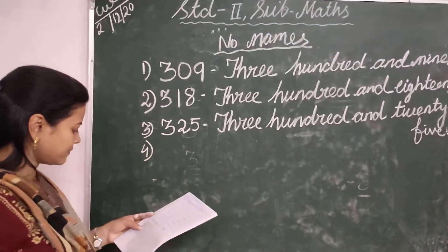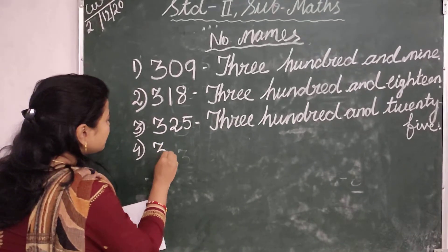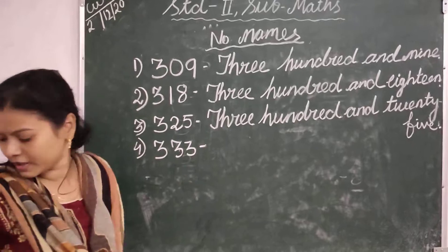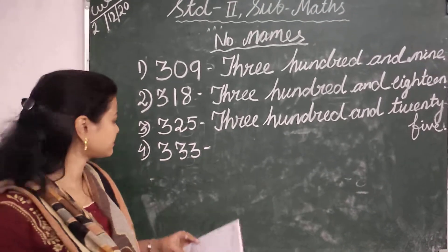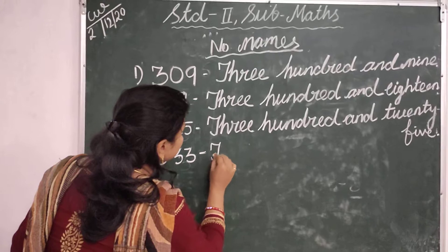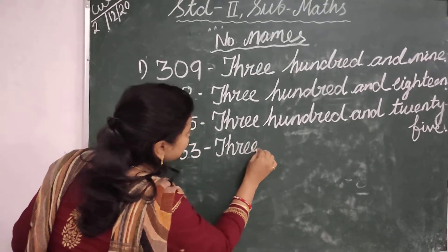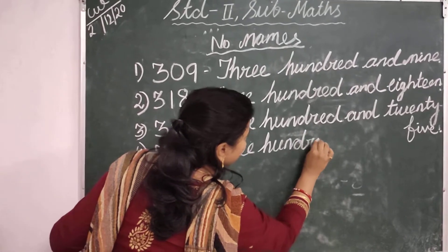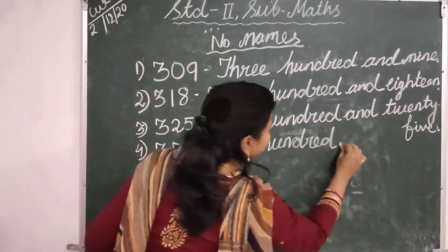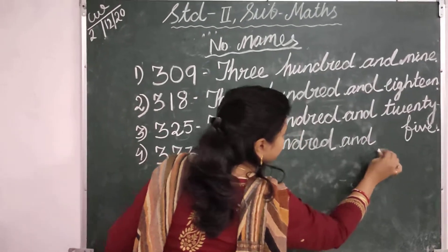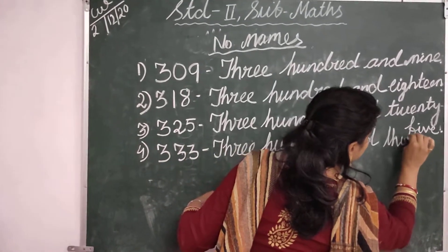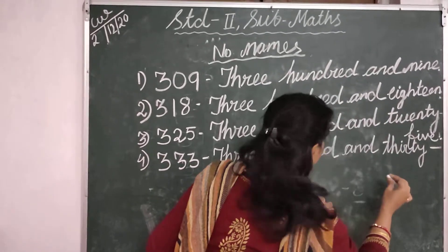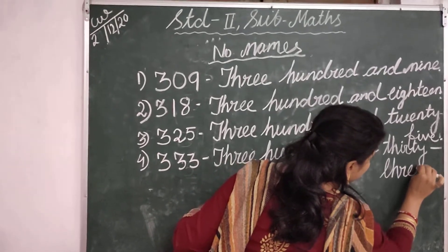Then the next number is 333. Three hundred and thirty-three. T-H-R-E-E H-U-N-D-R-E-D T-H-I-R-T-Y T-H-R-E-E.